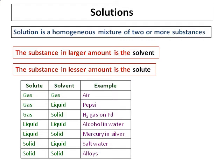Solutions can range from gas-gas solutions all the way to solid-solid solutions. For example, air is a gas-gas solution, and alloys like bronze and brass are solid-solid solutions. So let's go ahead and learn more about solutions.